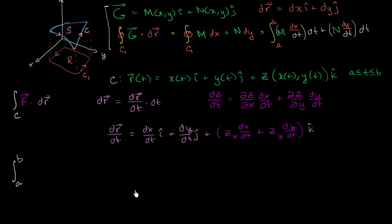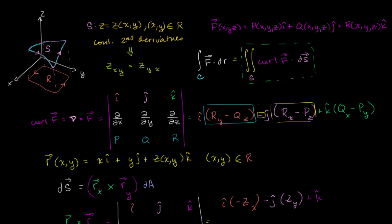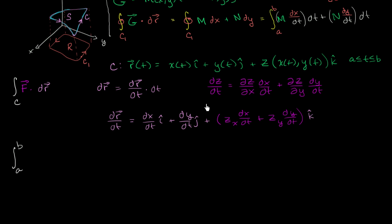Let me rewrite it down here. Our vector field F is P times i plus Q times j plus R times k. When we take the dot product of F dot dr, we're taking the dot product of this and this, and we have to throw a dt at the end.